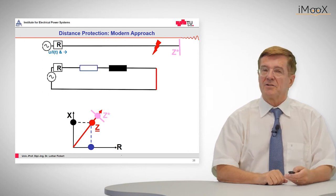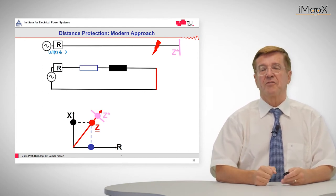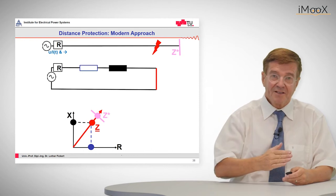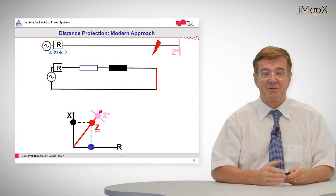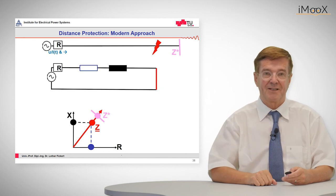And there is always a limit where we say if the fault is before this characteristic tripping point we will trip. If the fault is behind it we will restrain and wait.